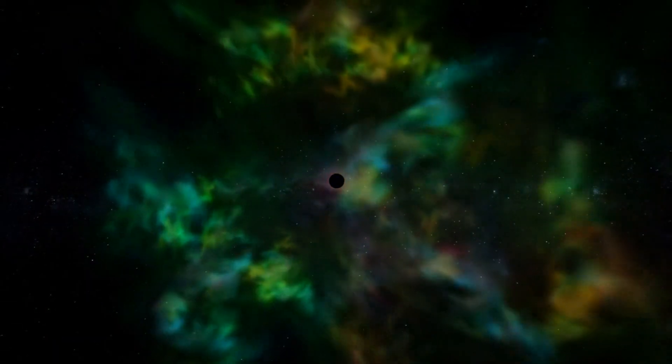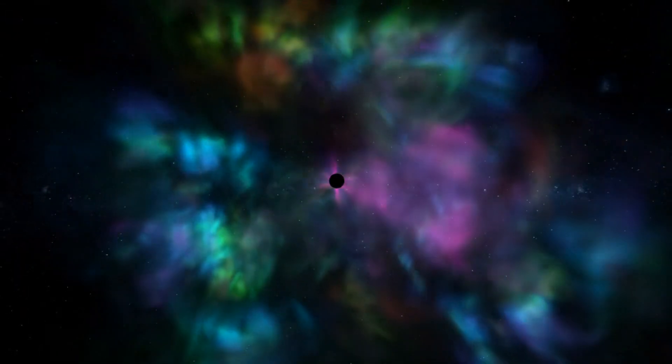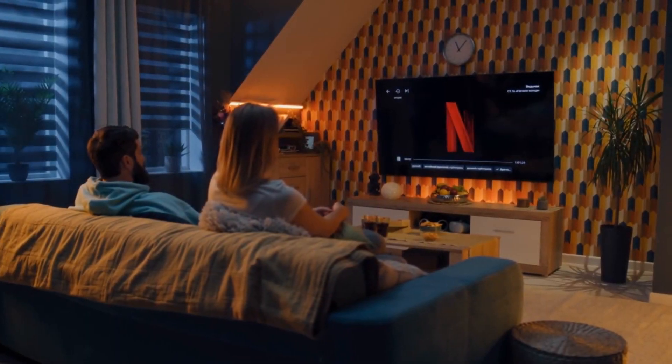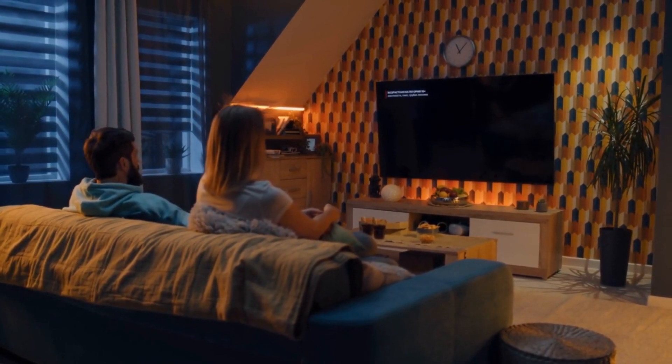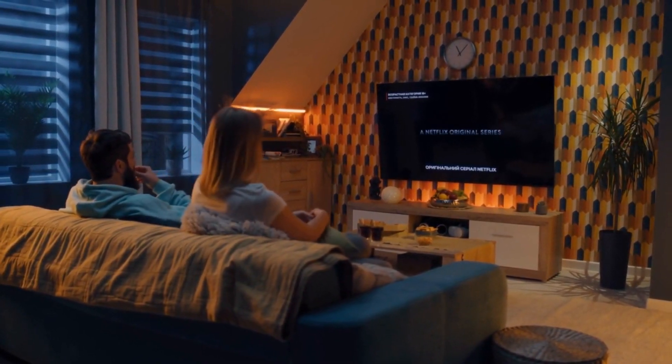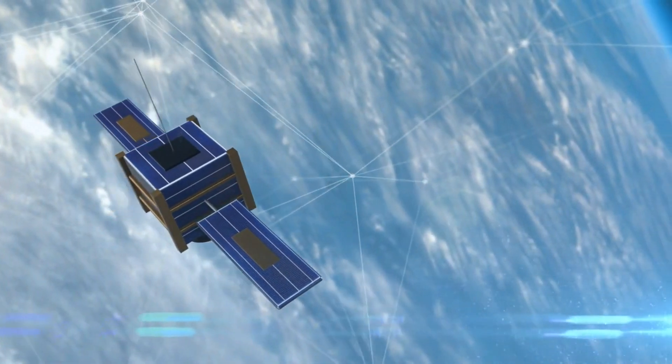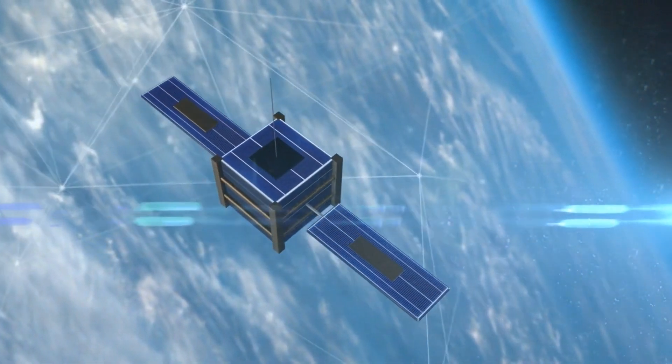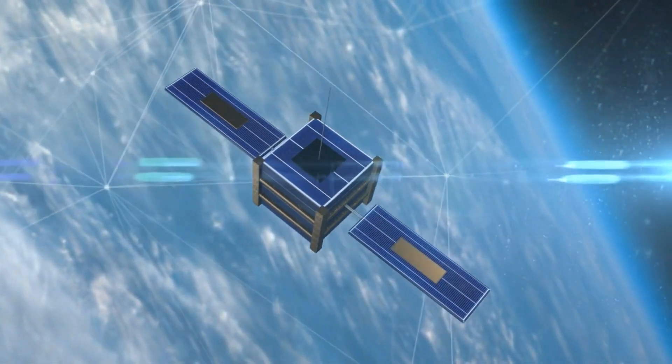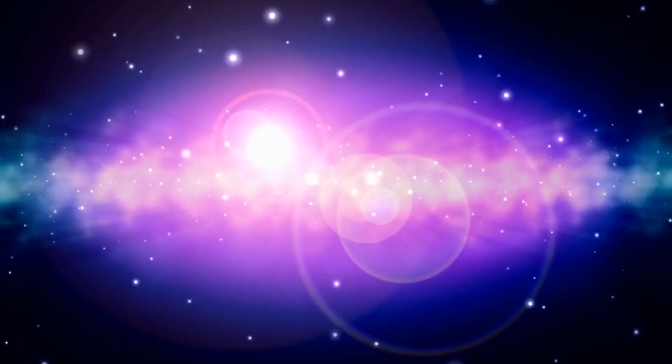So we've delved into the physical effects of a Betelgeuse supernova and how it could resonate on a personal or even philosophical level. But let's get even more practical. What about technology? Could the cosmic pyrotechnics mess with our gadgets? Is your Netflix binge-watch session safe? The answer is mostly yes. The electromagnetic waves emitted by a supernova wouldn't really have the punch to interfere with our satellites or electrical grids from 700 light years away. But the event could produce something else that's intriguing: cosmic rays.